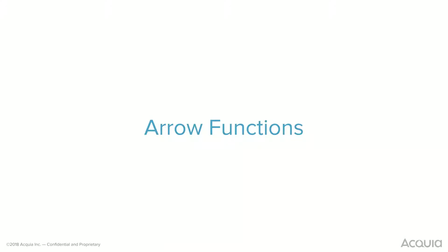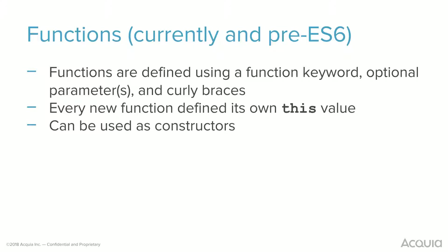Arrow functions are one of those things I didn't realize how beautiful they were until I started getting errors from not understanding normal functions. Pre-ES6, functions are defined using a function keyword, optional parameters, and curly braces. Something important to note: every new function defined its own 'this' value, and it can also be used as a constructor. The examples will display it a little better.